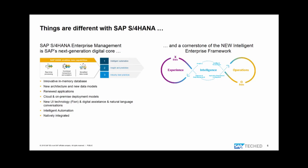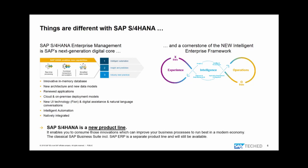SAP S/4HANA as a digital core is part of the new intelligent enterprise framework. It's a new product line — when you move from ERP to S/4HANA, it's not an upgrade; it's really a shift between one product and another with a license. This allows us to implement disruptive innovations that you can consume to improve your business processes and perform digitalization within your company.